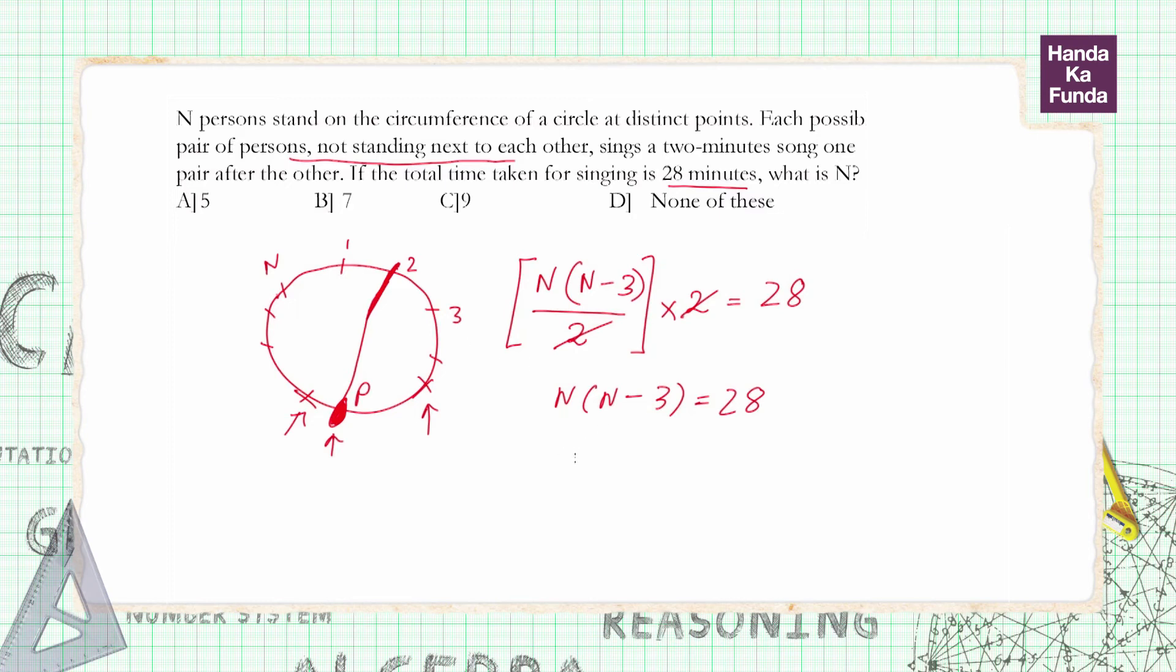Now I think you can just simply use the options or solve the quadratic. Using options would be faster. If I take it as 5, 5 into 5 minus 3, 5 into 2 is 10. This cannot be the answer.